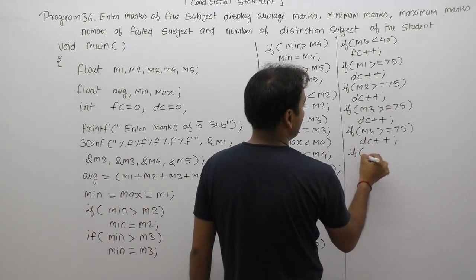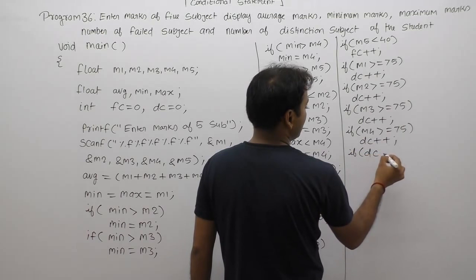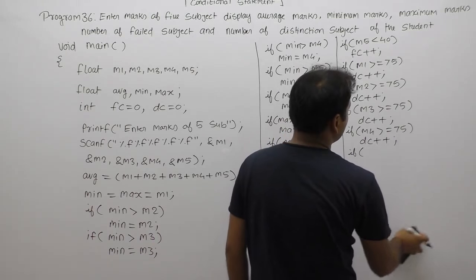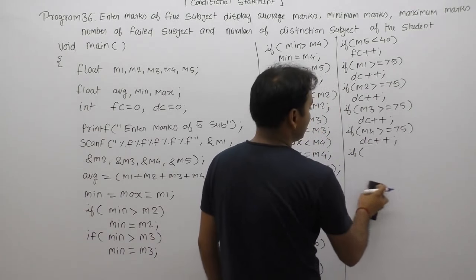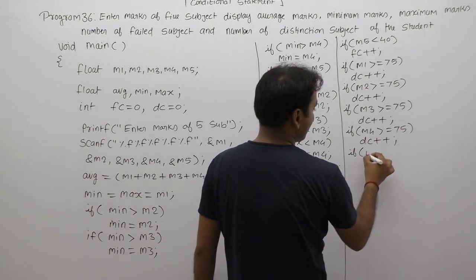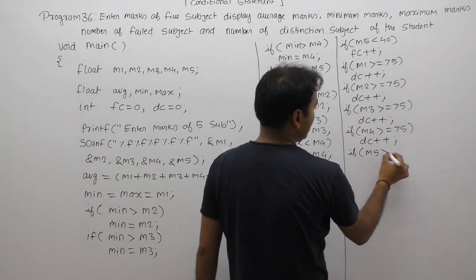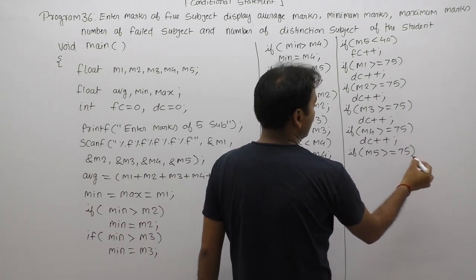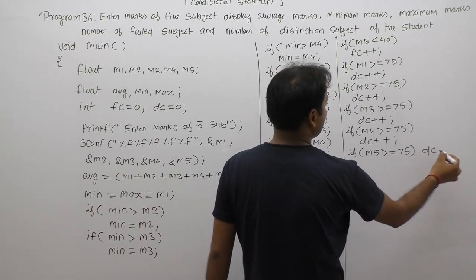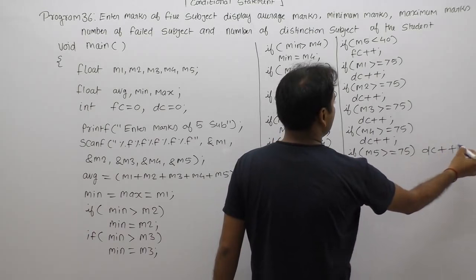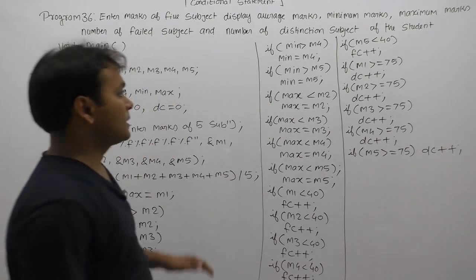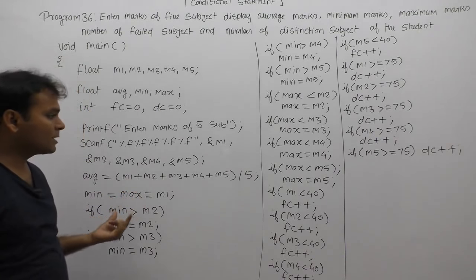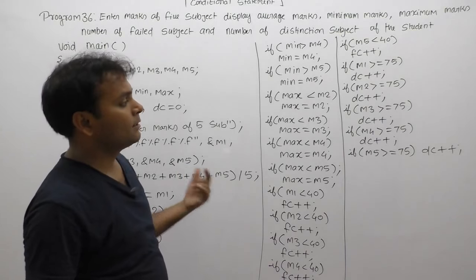Next condition: if M5 greater than or equals to 75, then again DC++. Once all five parameters are evaluated, display the results: average marks, minimum, maximum, DC, and FC.